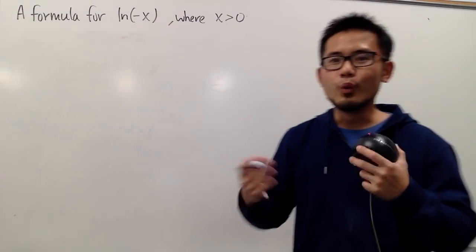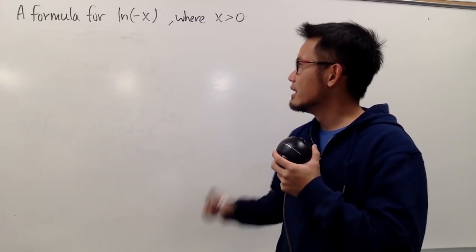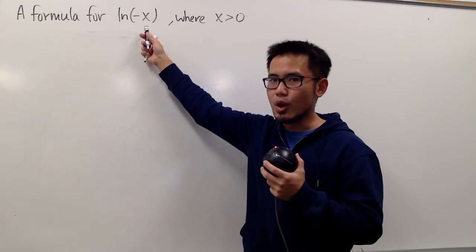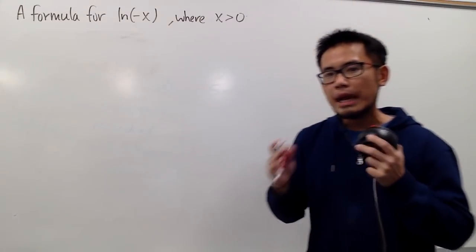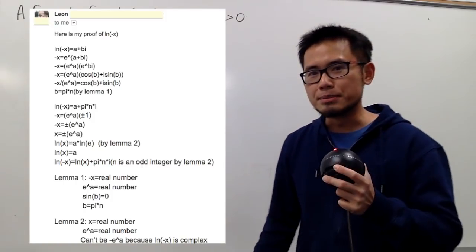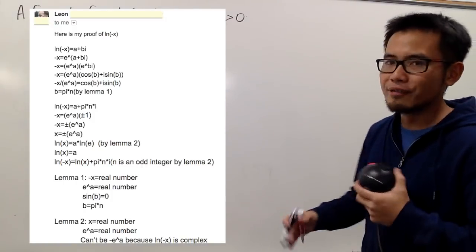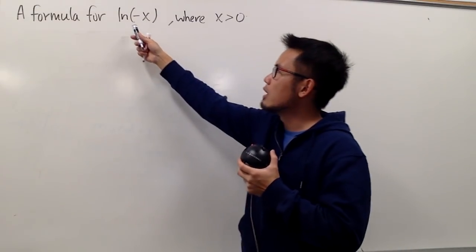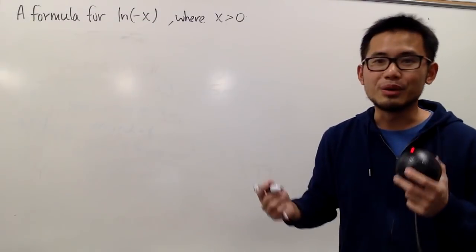However, in the complex world, we can do a lot more. Therefore, let's take a look at how this is going to go in the complex situation. And by the way, this is not my idea, this is actually done by Leon. He is one of my subscribers, and this is his way of coming up the proof for the formula of ln of negative x. And let's see how it goes.